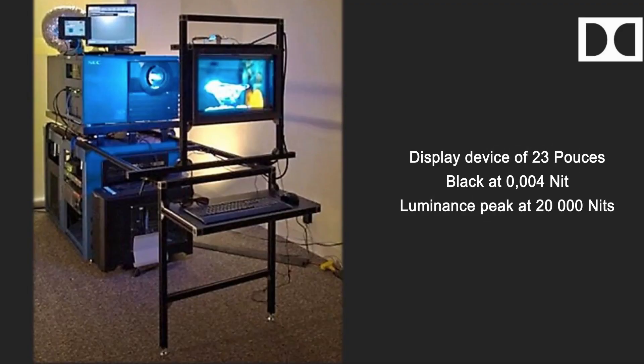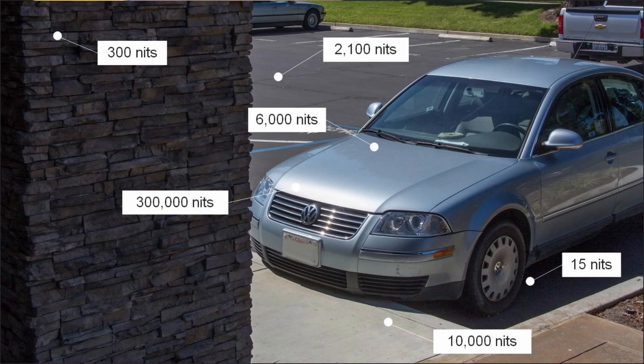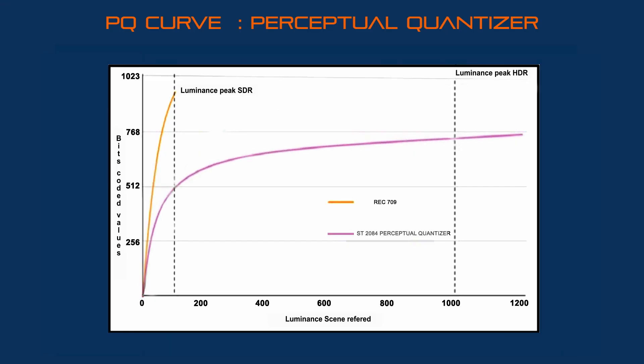Dolby performed a lot of experiments, broadcasting a signal on a display ranging from 0 to 100 nits, to 10,000 nits, and from 0 to 20,000 nits. They noticed that the most agreeable picture to watch was located between 0 and 10,000 nits. They developed a curve based on human vision, able to associate all values from 0 to 10,000 nits with a corresponding value in bits. It's an absolute curve.